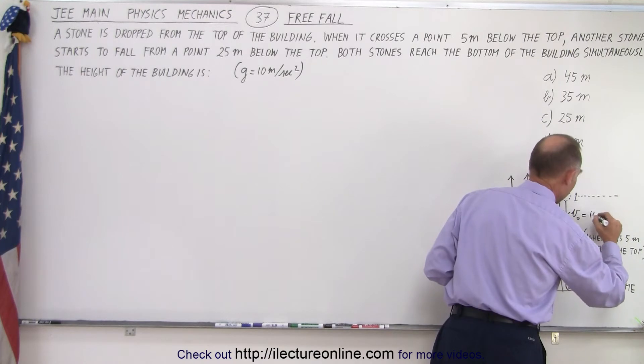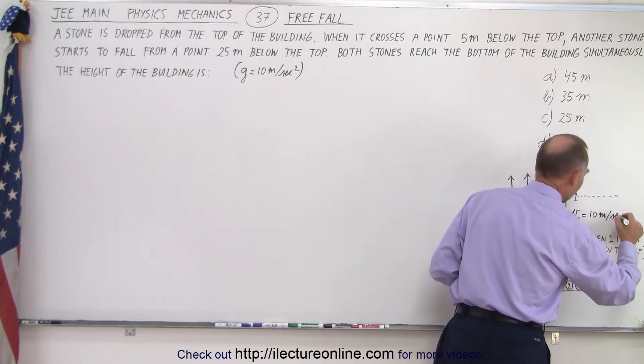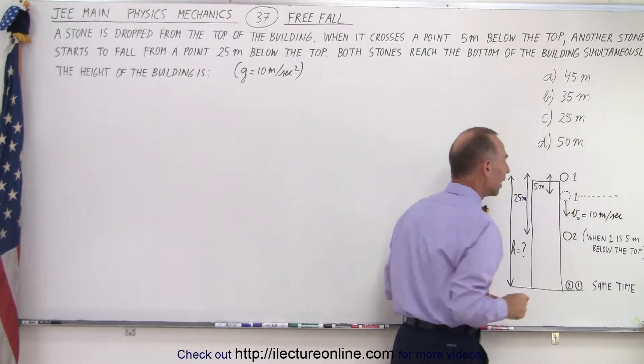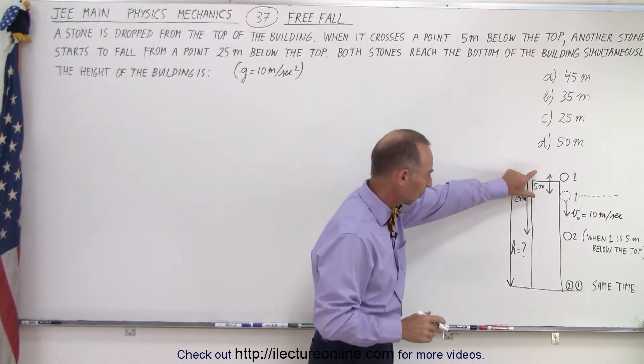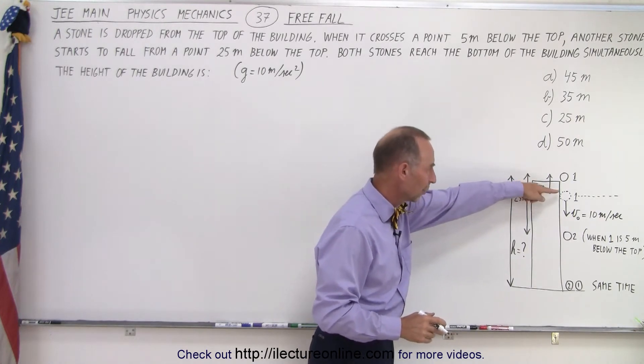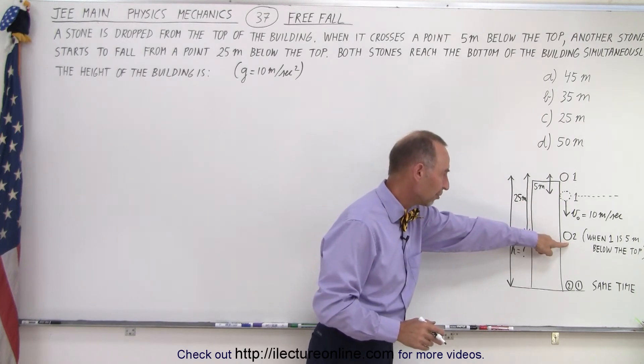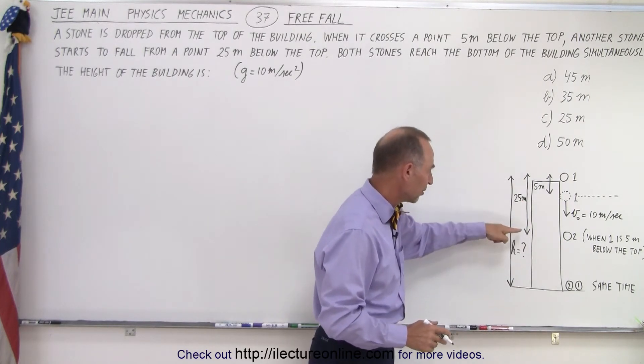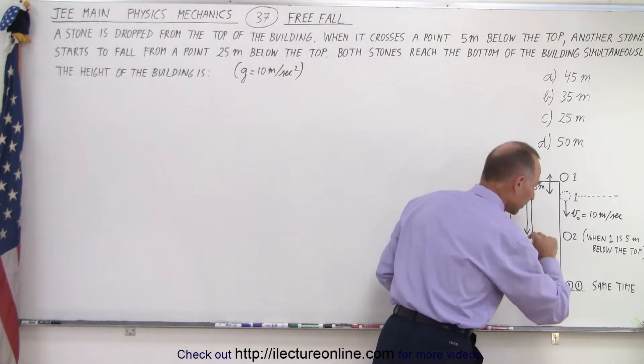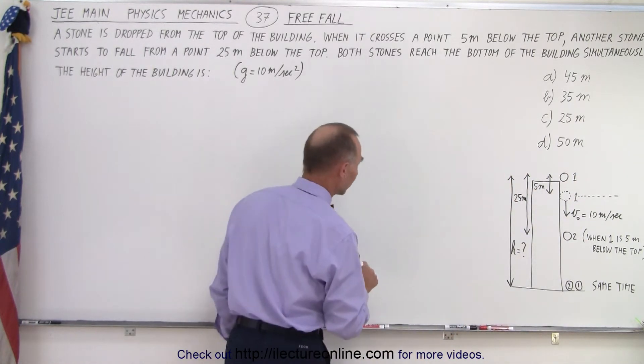The initial velocity would be 10 meters per second for ball 1 after 1 second. After 1 second, it will have dropped 5 meters. Now, with that initial velocity and this rock dropping from this point, which is 25 meters below the top, they both hit the bottom at the same time. So, what we can do is as follows.